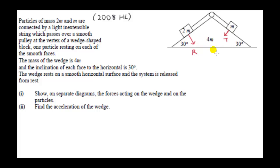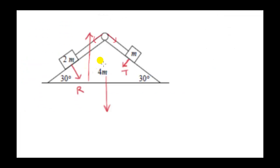Of course, we have the weight of the wedge, and we have a force on the wedge due to the horizontal surface. We also have two tension forces acting on the pulley. We're dealing with just the same piece of string, so tension is the same throughout the string. These two tension forces act on this pulley, which is part of this wedge — part of the 4m mass.